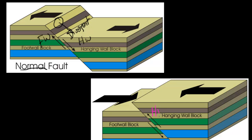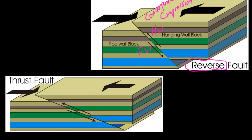Here we have the same setup — hanging wall and foot wall. What's the hanging wall doing? The hanging wall is moving up. That makes this a reverse fault. It's caused by compression or convergence — we're pushing the two plates together. Just as we call it divergence in plate tectonics, in terms of earthquakes we call it tension and compression. We can get a very low-angled reverse fault, which we call a thrust fault, where one plate is being thrust right over the top of the other. It's still convergence, still compression, still a reverse fault — just a special type.